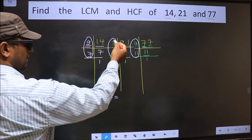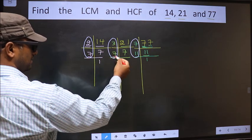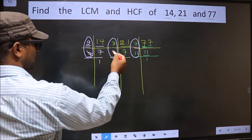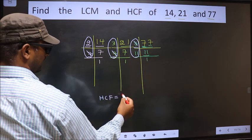Next number, 7. Do we have 7 here? Yes. Go to the next place. Do we have 7 here? Yes. So you cut 7 and write here.